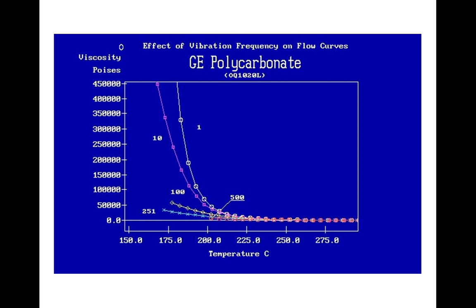Constant to what value? Well, it's why there are several curves. It's equal to 1 on the yellow top curve, 10 on the pink one, 100 on the yellow diamond symbol one. And the green is 251, and hardly seen here at 500 is the 500 radians per second curve.